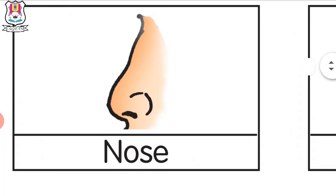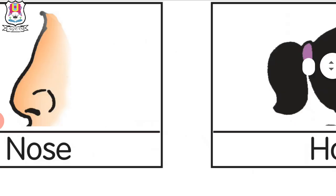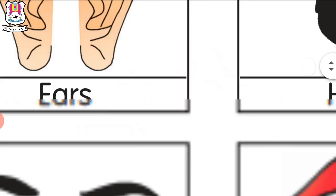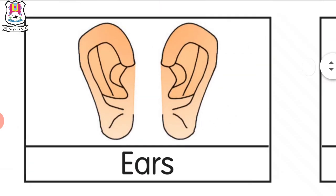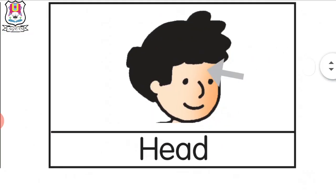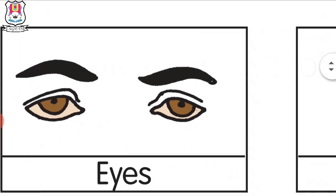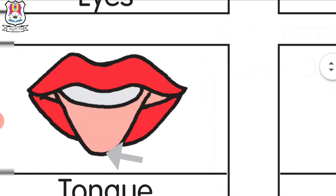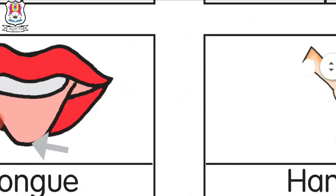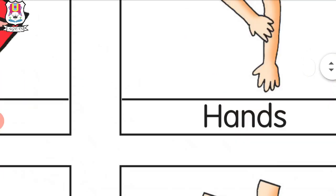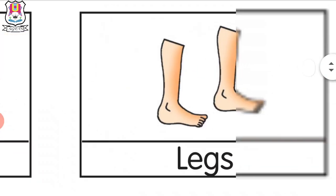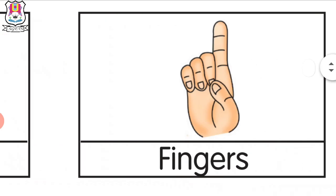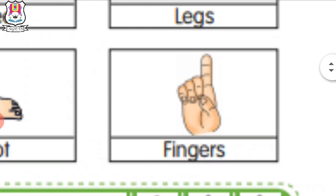Nose. What is this? Nose. What is this? Hair. And ears. Head. Eyes, lips, tongue, hands, knee, legs, foot and fingers.